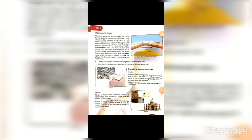Metamorphic rocks are formed deep under the earth's surface, or when the plates that form the earth's crust collide with each other. Metamorphic rocks ki formation kahan hoti hai? Under the earth's surface. Aur kab hoti hai? Jab hamari earth's crust ki tectonic plates jab collide karti hain — aapas mein takra jati hain — toh hamari metamorphic rocks ki formation hoti hai.